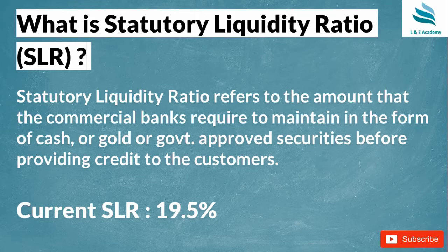For example, I am a bank and I take 100 rupees from a customer. I could lend the entire 100 rupees to another customer and make profit — paying 4% savings interest and lending at 8%, making a 4% profit. But RBI says you cannot lend the entire 100 rupees. You need to give RBI 19.5 rupees out of every 100 rupees, and you can only lend the remaining amount.